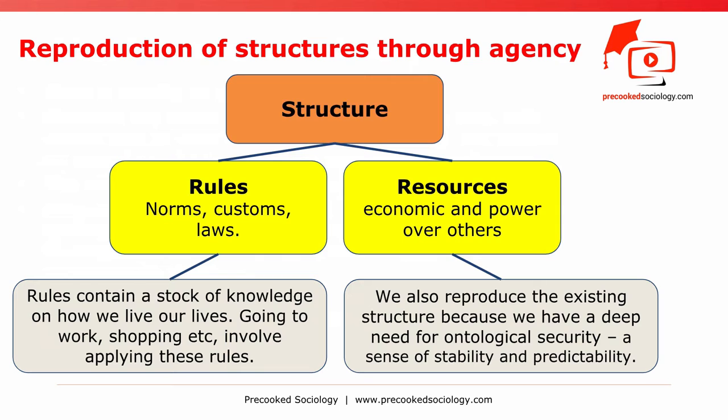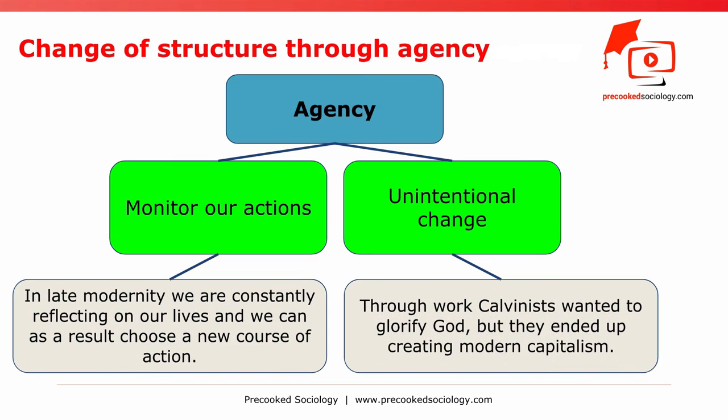However, structures tend to be reproduced, for two reasons. First, rules contain a stock of knowledge on how we live our lives — going to work, shopping, etc. — all involve applying these rules. We also use resources when shopping, so just by going about our day we reproduce structure. Second, we reproduce existing structure because we have a deep need for ontological security — a sense of stability and predictability. Constant shifts in social structure would be, at best, unsettling.